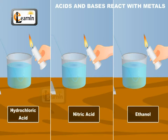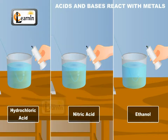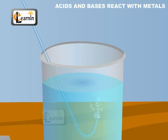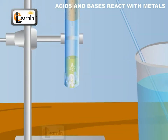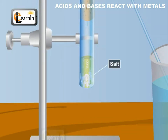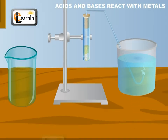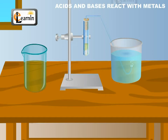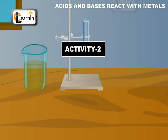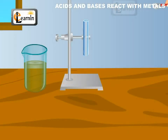Repeat the activity with other acids such as hydrochloric acid, nitric acid, and ethanol, and observe the reactions. Note that the metal in the above reaction displaces hydrogen from the acid, seen in the form of hydrogen gas. The metal combines with the remaining part of the acid and forms a compound called salt. Thus the reaction is: acid plus metal equals salt plus hydrogen gas.